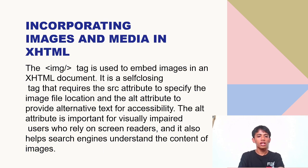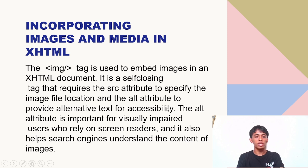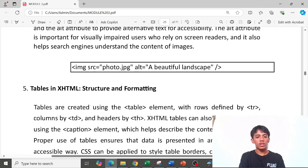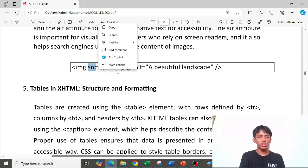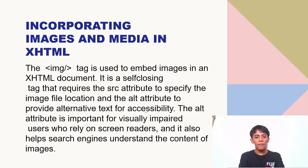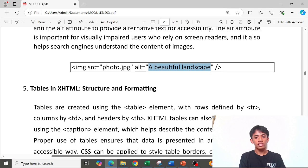Incorporating images and media in XHTML — the img tag is used to embed images in an XHTML document. It is a self-closing tag that requires the src attribute to specify the image file location, and the alt attribute to provide alternative text for accessibility. Here is an example: the image tag with a source attribute containing the image address and an alt attribute for alternative text.